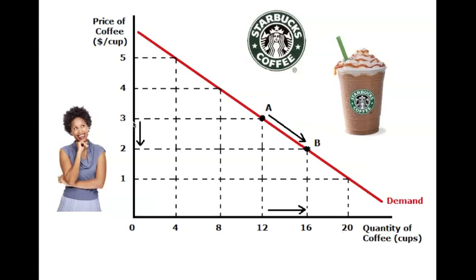For example, at a price of $3, she's willing to buy 12 units. And when that price falls from three to two, she's now willing to buy 16. In economics, we call this a movement along the demand curve — from point A to point B. Price controls this movement and changes the quantity demanded of the product.